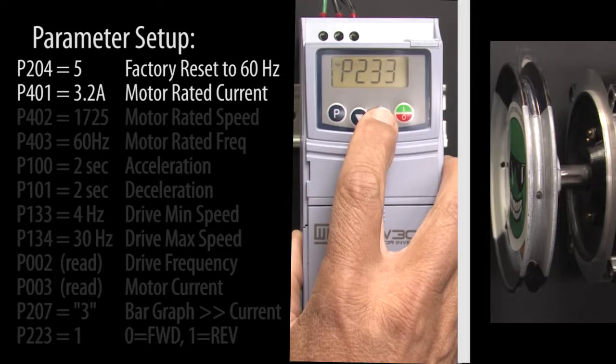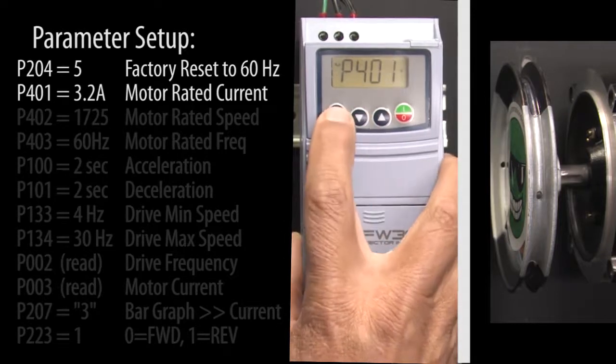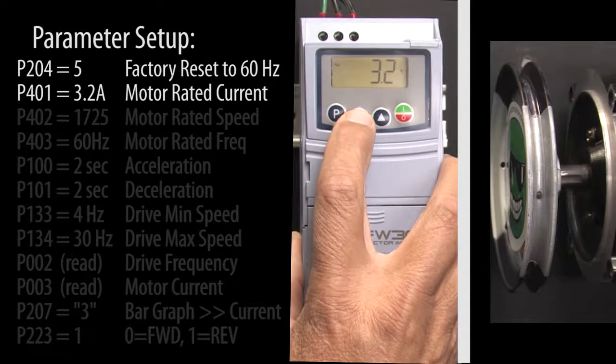Scroll to parameter 401 which is the motor's rated current. Ours is 3.2 Amps so we enter that and press P to accept it.